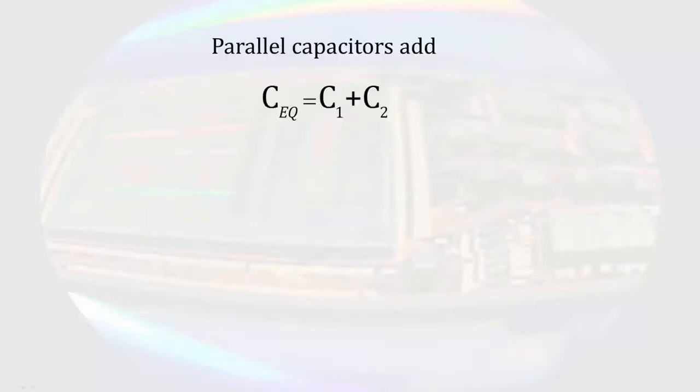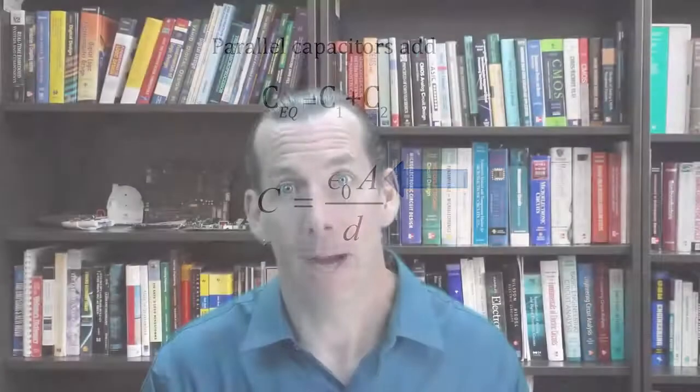So, to combine parallel capacitances, we simply add the capacitances together. If we think back to the equation for parallel plate capacitor, another way to think of this is that two capacitors in parallel have more area than a single capacitor. This would obviously increase the capacitance.